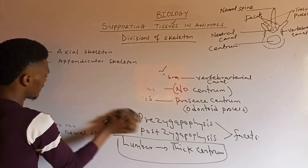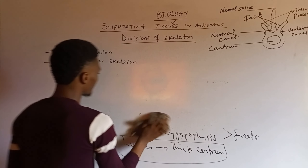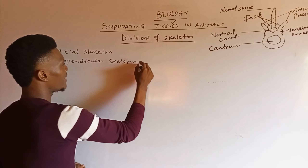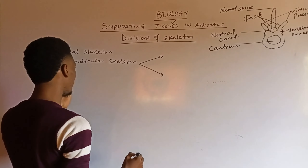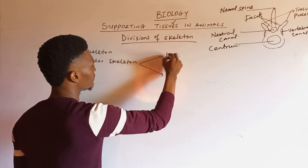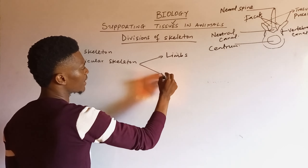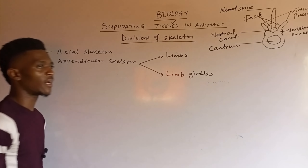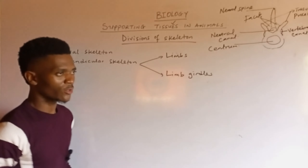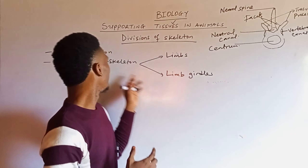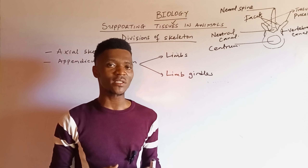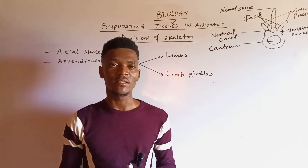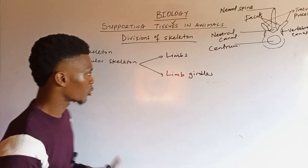Now let's progress to the appendicular skeleton. The appendicular skeleton is divided into two parts: the limbs and the limb girdles. The axial skeleton is divided into the skull, ribs, sternum, and vertebral column.